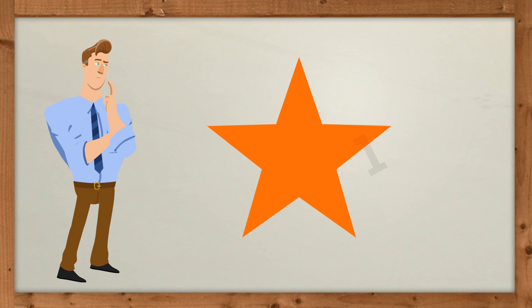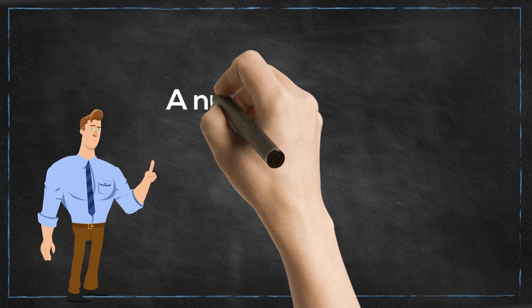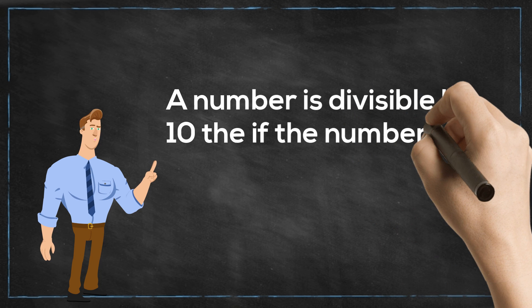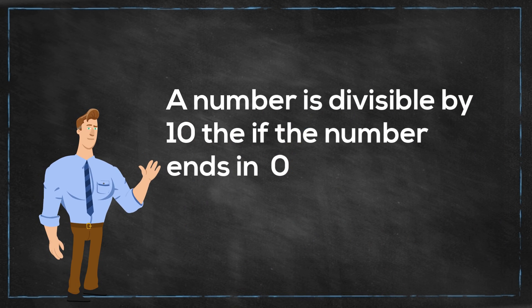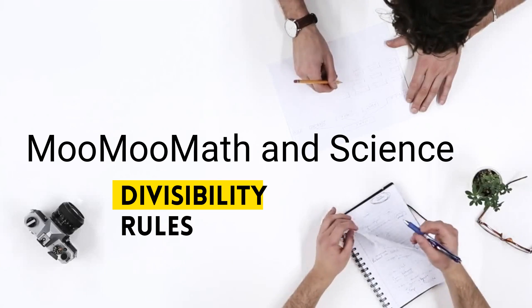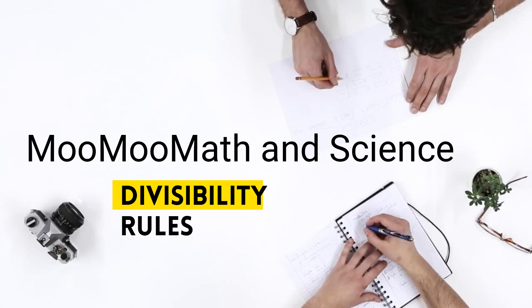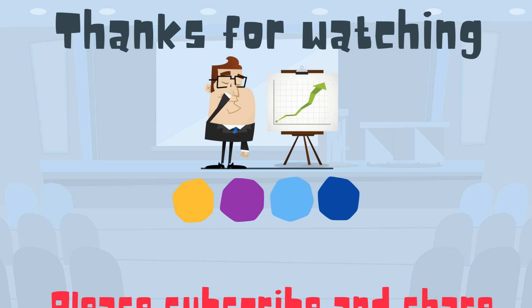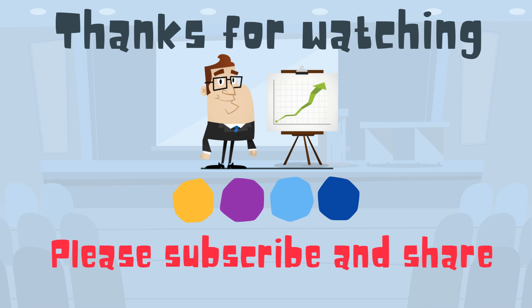The last one is 10, and it's probably the easiest one. A number is divisible by 10 if it ends in a 0. For example, 350 ends in a 0, so it's divisible by 10. So there we go — the divisibility rules of 2 through 10. I hope that helps, and MooMooMath uploads a new math and science video every day. Please subscribe and share.